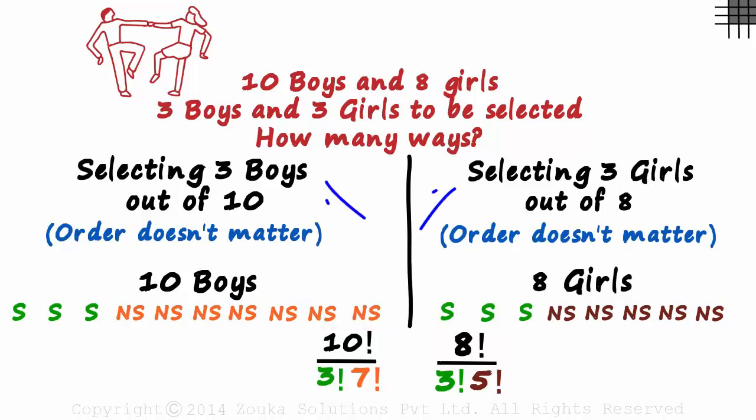But wait! We have the answers for each of these two cases, boys and girls. What's the answer to the question? The question asks us to find the number of ways in which we can select 3 boys and 3 girls out of 10 boys and 8 girls.